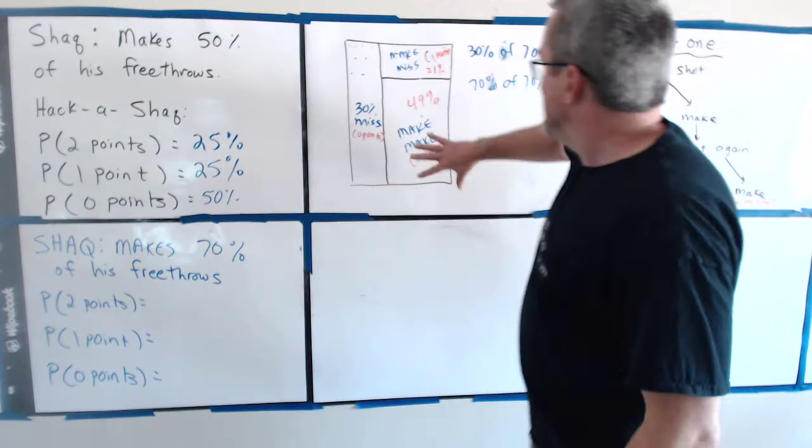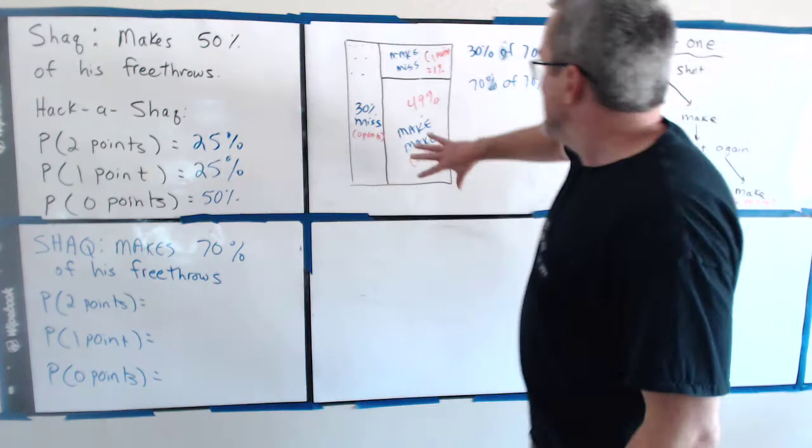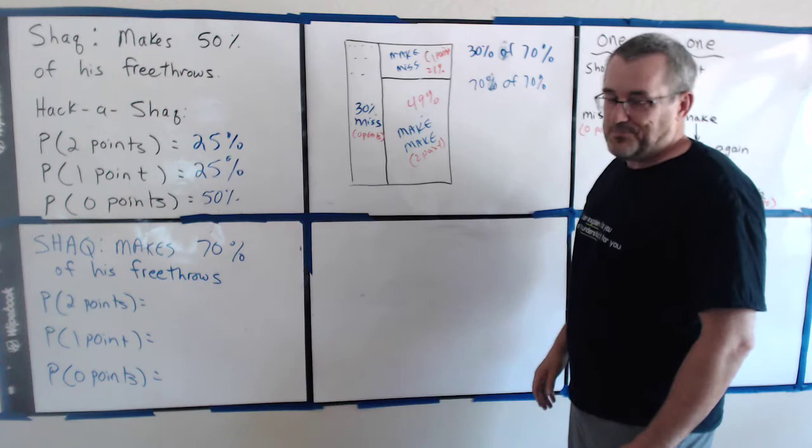49 plus 21 is 70. So, there's the 70 that he makes. And then, the 30 that he misses over there. So, it's all said and done. Look what we have now. What's the probability that in this new scenario, Shaquille gets 2 points.